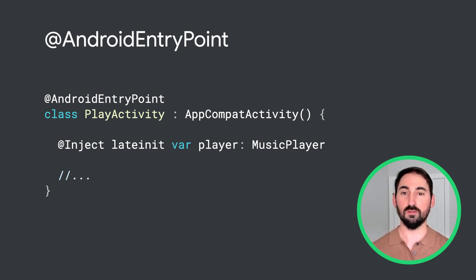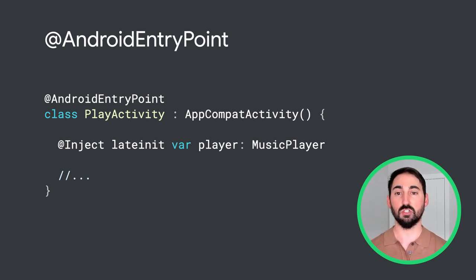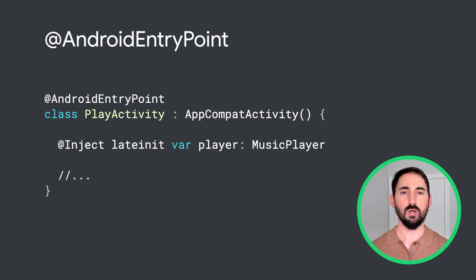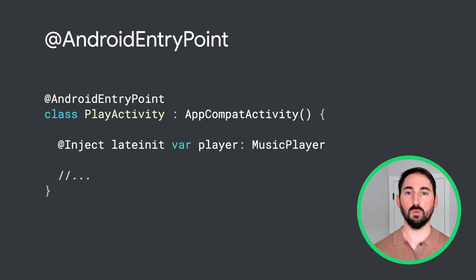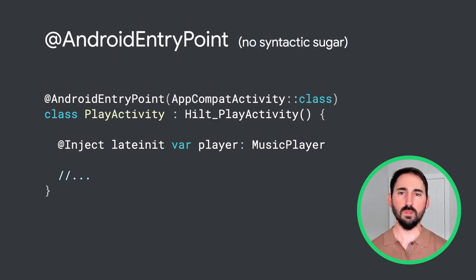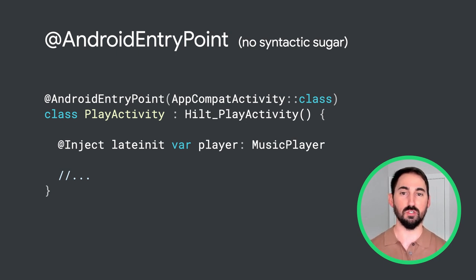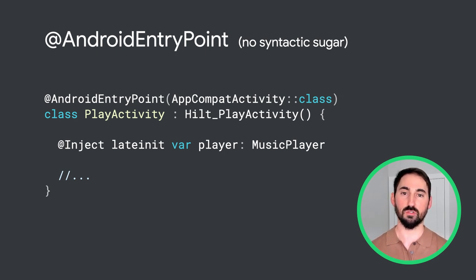If you're using Gradle, you're probably familiar with the simplified syntax shown in this example. However, this syntax is actually just syntactic sugar provided by the Hilt Gradle plugin — we'll talk more about that later. Without the syntactic sugar, we see that the original base class, AppCompatActivity, is really an input to the Android Entry Point annotation. The PlayActivity itself actually extends a generated class, Hilt_PlayActivity.